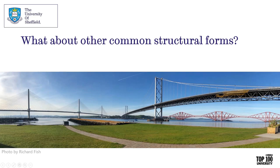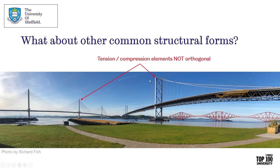With this knowledge we can look at common structural forms. A photograph taken near the Forth Bridges shows the original Forth Bridge, the Forth Road Bridge in the foreground, and the new Queensferry Crossing. You can see that the pylons, which are in compression, are not orthogonal to the tension members — the main cables of the Forth Road Bridge and the cable stays of the Queensferry Crossing. This suggests these structures are not structurally as efficient as they could be.